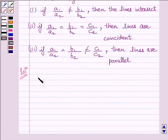Rewriting the equations given in the question, we get 6x minus 3y plus 10 equals 0 and 2x minus y plus 9 equals 0.